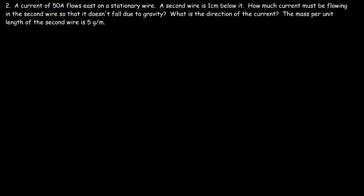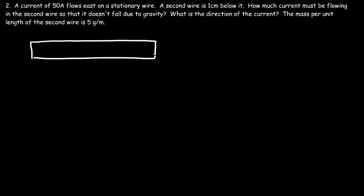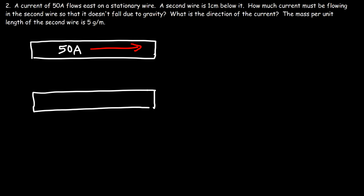Now let's move on to our second problem. A current of 50 amps flows east on a stationary wire. A second wire is one centimeter below it. How much current must be flowing in the second wire so that it doesn't fall due to gravity? Gravity is going to pull the second wire downward, so we need a magnetic force that lifts the second wire.